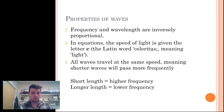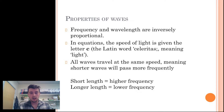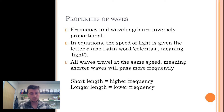Frequency and wavelength are inversely proportional, meaning that when the value of one goes up, the other goes down. Electromagnetic waves travel at the speed of light, which is given the letter c in equations. All waves travel at the same speed, meaning that shorter waves must pass more frequently than longer waves. Short waves mean higher frequency, and longer waves mean lower frequency.